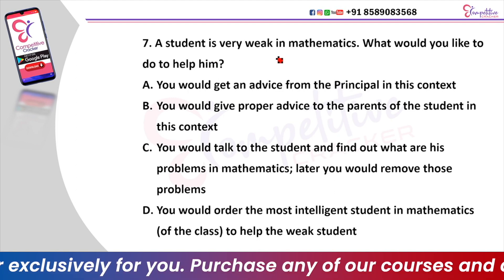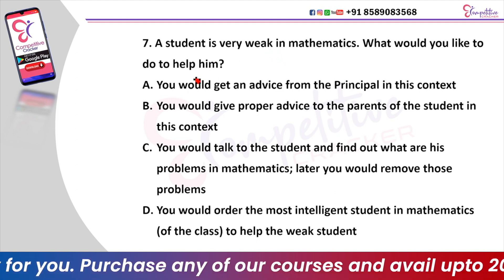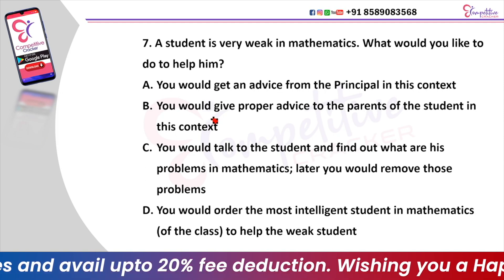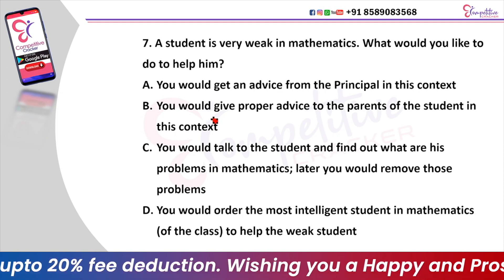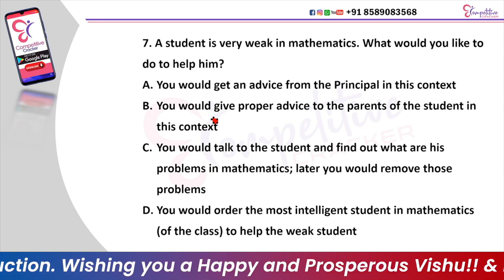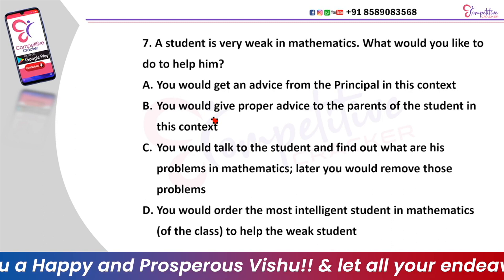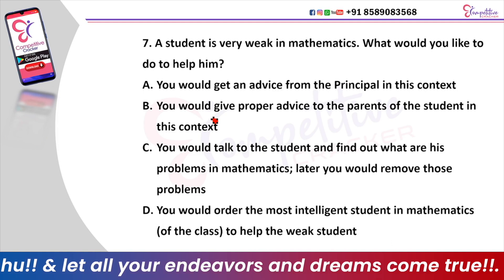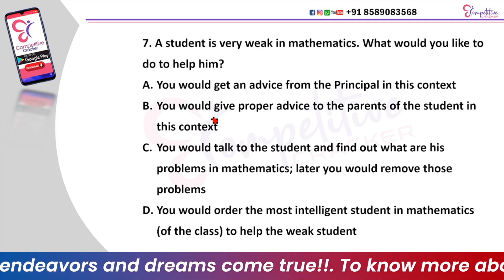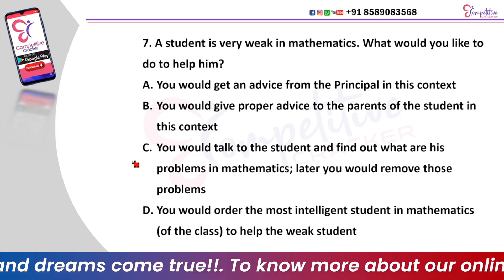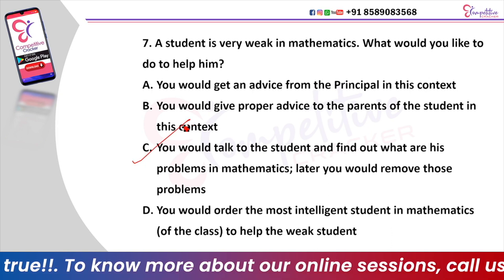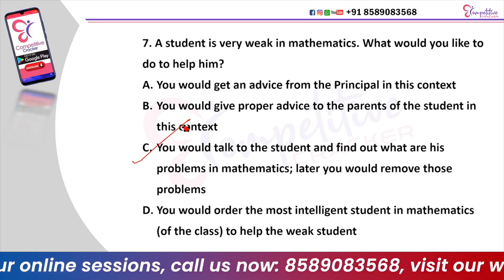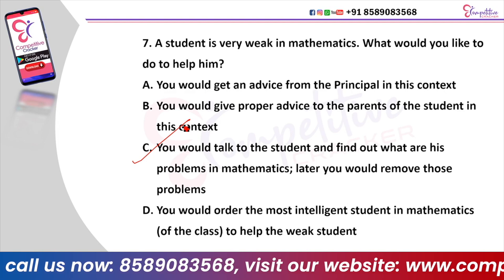A student is very weak in mathematics. What would you like to do to help him? Option A, you would get advice from the principal. Option B, you would give proper advice to the parents of the student. Option C, you would talk to the student and find out what are his problems in mathematics. Option D, you would order the most intelligent students in mathematics to help the weak student. And the right answer is Option C — you would talk to the student and find out what are his problems in mathematics.